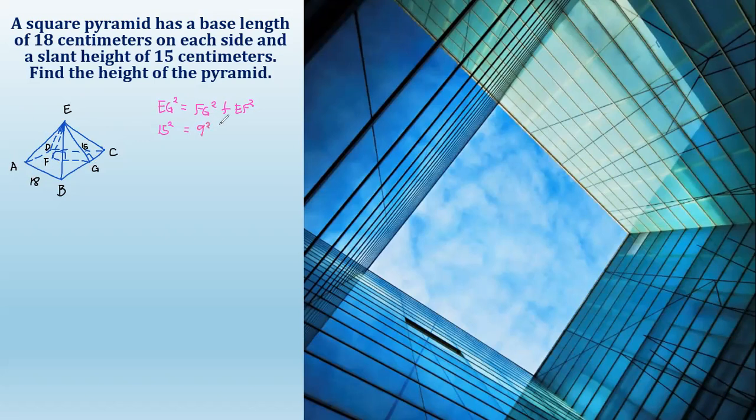So 9 squared plus the height EF squared. So 15 squared is equal to 225, meaning 15 times 15 equals 225. That equals 9 squared, which is 9 times 9 equals 81, plus EF squared.